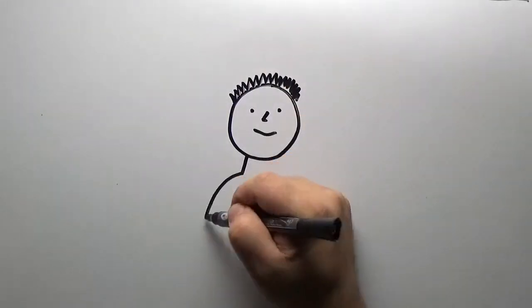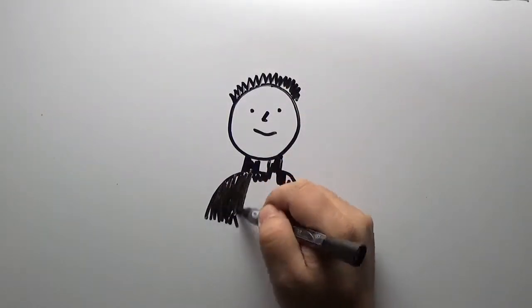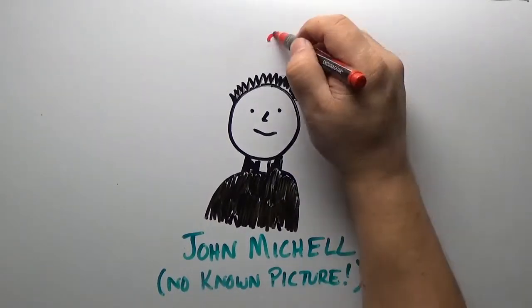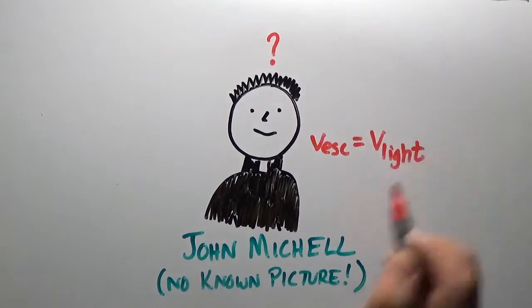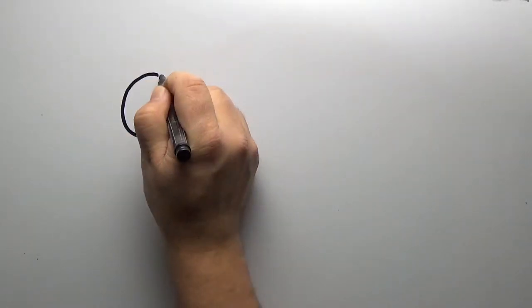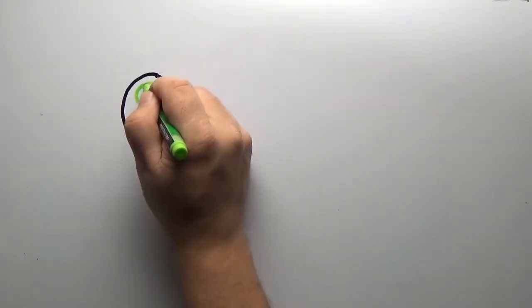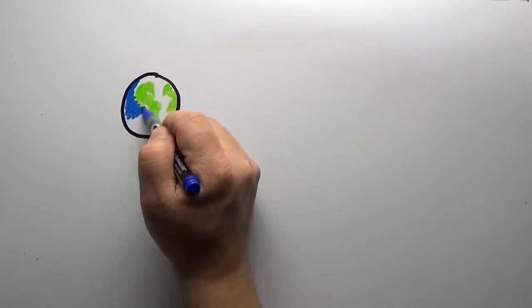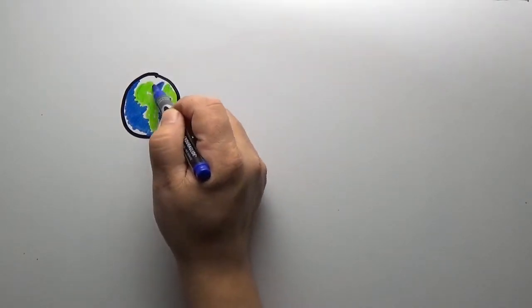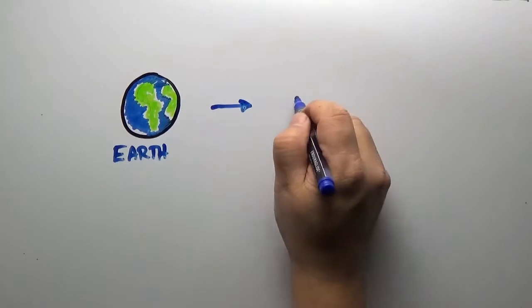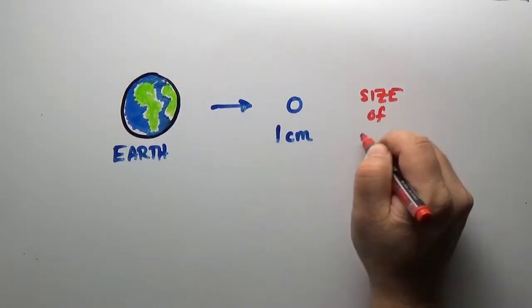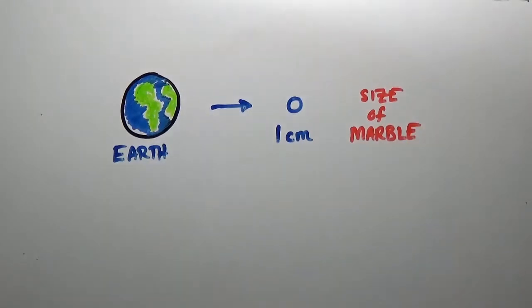In 1783, the Reverend John Mitchell asked an interesting question. How strong would gravity have to be if the escape speed was the speed of light? The strength of gravity one feels on the surface of a planet or star depends on how compact it is. If the Earth were shrunk down to just one centimeter across, the size of a marble, the gravity would grow so strong a beam of light could not escape from the surface.